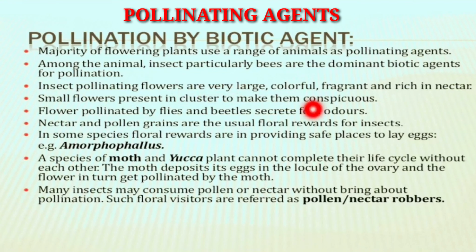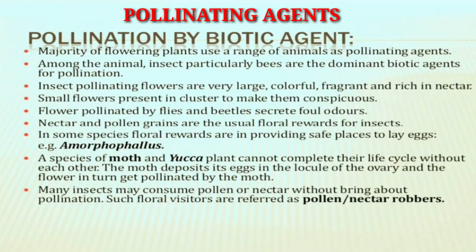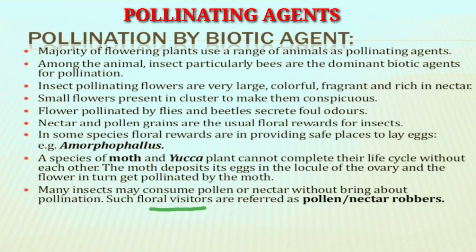Small flowers are present in clusters to make them conspicuous. In flowers pollinated by flies and beetles, they produce foul odors. Nectar and pollen grains are the usual flower rewards for insects. In some plants, the flower provides a safe place to lay eggs, for example in Amorphophallus. A species of moth and Yucca plant cannot complete their life cycle without each other — the moth deposits its eggs in the locule of the ovary and the flower in turn gets pollinated by the moth. Many insects may consume pollen and nectar without bringing about pollination; such insects are called pollen or nectar robbers.